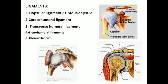Let us quickly go through the other ligament structures: the coracoacromial ligament, which forms the coracoacromial arch; the transverse humeral ligament, which bridges the bicipital groove; and the glenohumeral ligaments and glenoid labrum — these are the supportive factors of the shoulder joint.